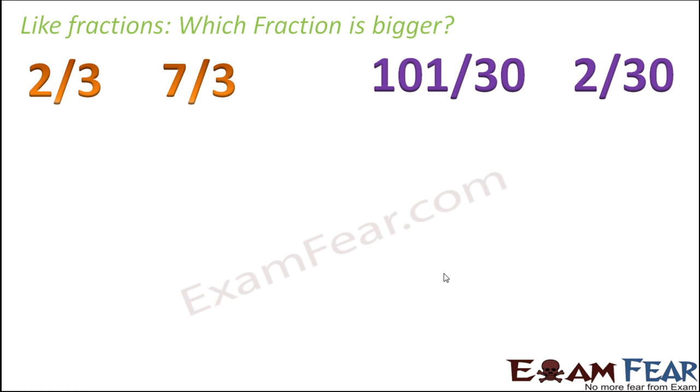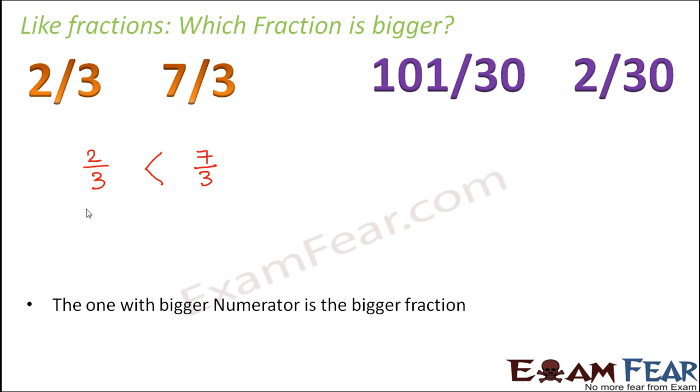Let's say we look at the first example where we see 2 by 3, 7 by 3. Now the denominators are already same, so we just need to compare the numerators. So 2 and 7, out of these two which is bigger? So definitely 7 is bigger and therefore 7 by 3 is bigger than 2 by 3.